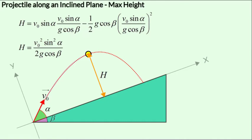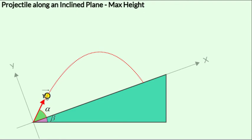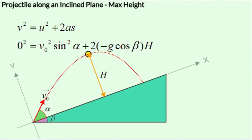We used the second equation of motion along the y-axis to get to the maximum height, but we could as well have used the third equation of motion along the y-axis. Let's quickly go through that. The third equation of motion is V² equals V₀² plus 2as, applied along the y-axis.